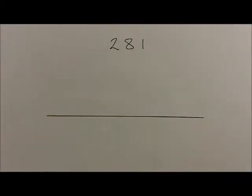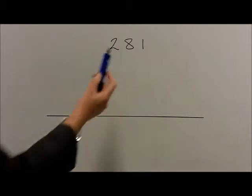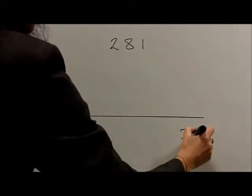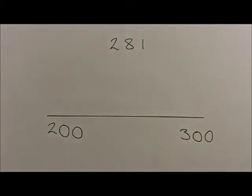When we are rounding to the nearest 100, children need to decide which two multiples of 100 the number lies in. So for example, with the number 281, this lies in between the numbers 200 and 300, being multiples of 100.